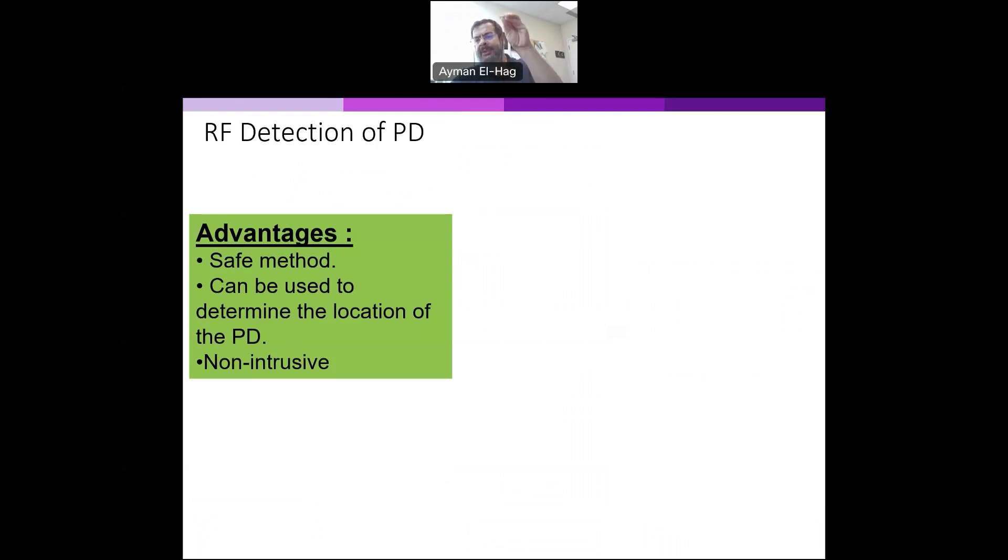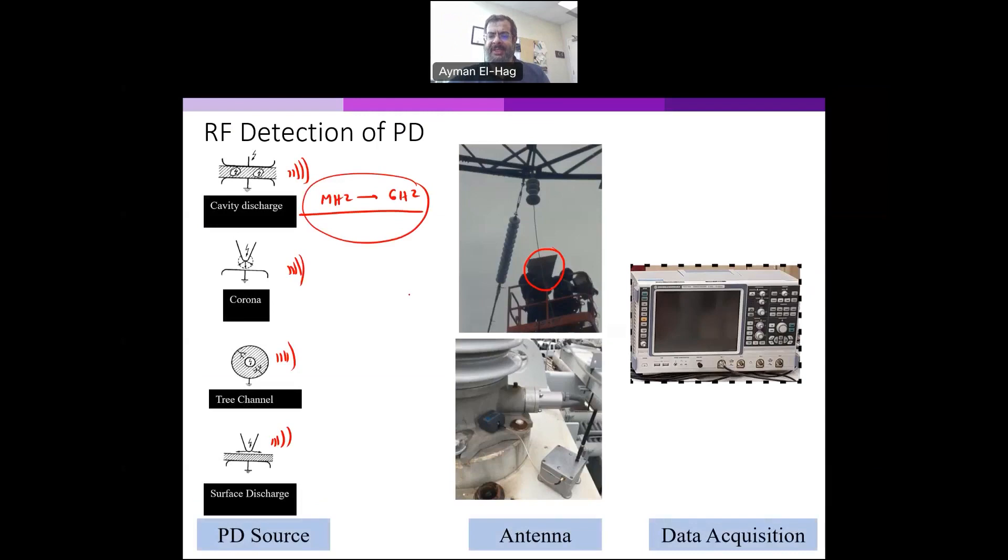Except if we have to put it inside the device, as you can see here. This is the antenna used to detect partial discharge for outdoor insulators. That is completely non-intrusive. But if I have to insert the antenna inside the bushing here or inside the GIS system, it is a sort of intrusive test.